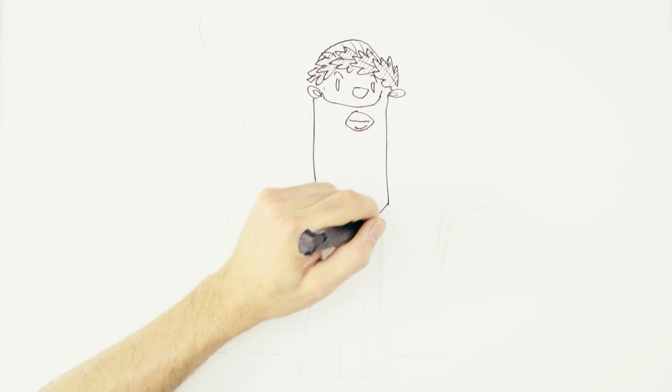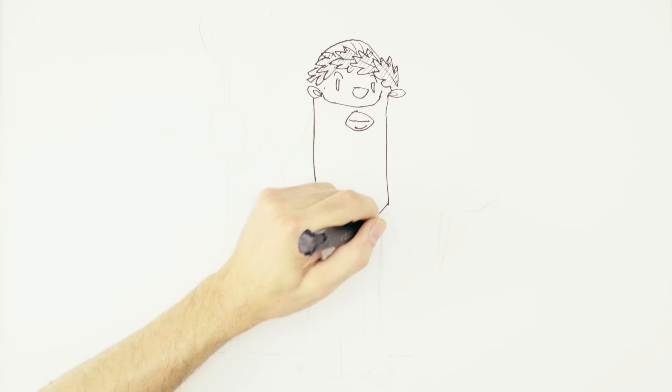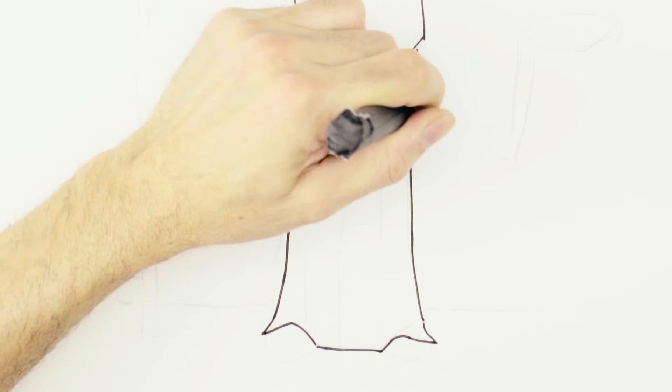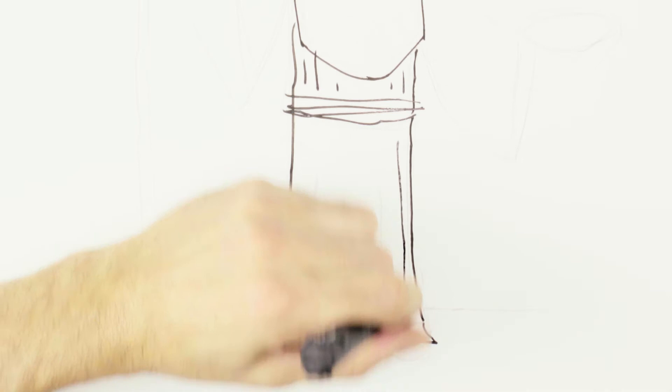And then we start here on the robe part of it. Part of the reason that the underdrawing with the pencil allows me to have more liberty once I start drawing with the ink is because the placement's already there. So I don't have to think necessarily where anything's going to go.